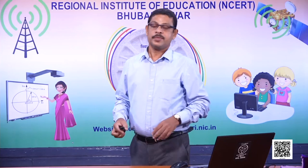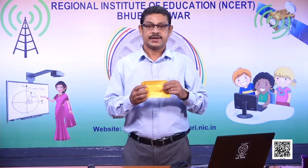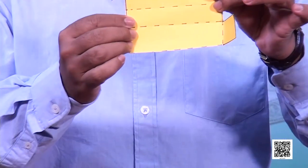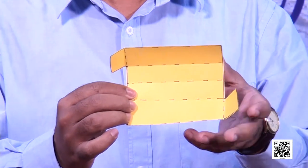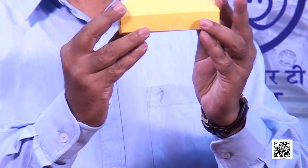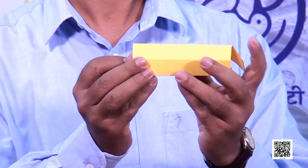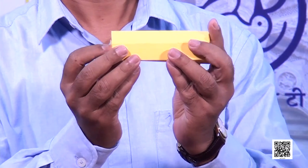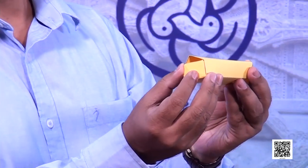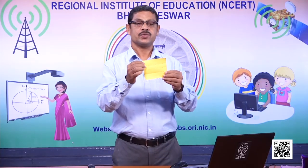Now we have to fold this shape — whether I can fold it into a box or not. Let us find out. I have to fold along the dotted lines. I am folding it along the dots. Yes, I am folding it into a cuboid. I am getting a box here. So this shape can be folded into a box.